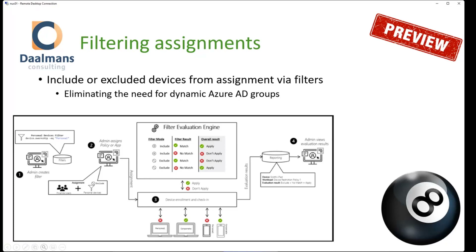If you assign a removal policy to a group of users, it would also be applied to a Windows 10 device and issue an error because that client isn't there. With filters, you can say 'I target this to a group of users but only apply this policy to Windows 11 devices' — then it will only be applied to Windows 11 and not Windows 10. This is a great addition; it's still in preview and they're still working hard to make more features available. Make sure to have a look at this when managing devices in Endpoint Manager.